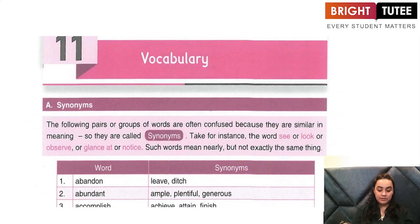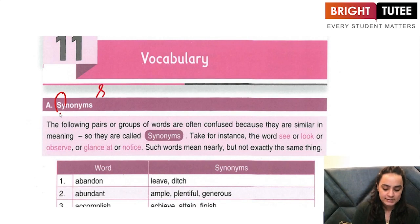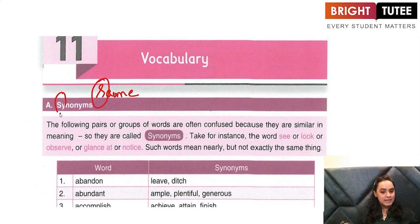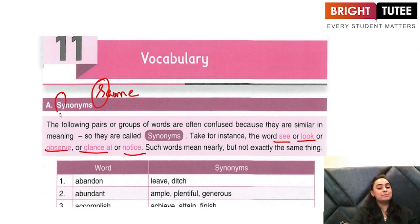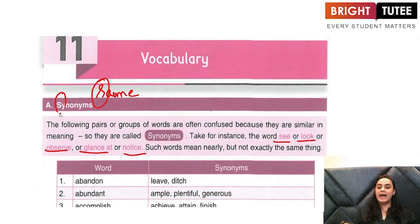Now what is a synonym? The best way to remember synonym: synonym begins with S, so 'same' — S, S. Those words which have the same meaning are known as synonyms. A word and its similar meaning will be known as its synonym. For example: see, look, observe, glance, or notice — all these words mean the same thing. So those words which have the same meaning are known as synonyms, and those words which have the opposite meanings are known as antonyms.